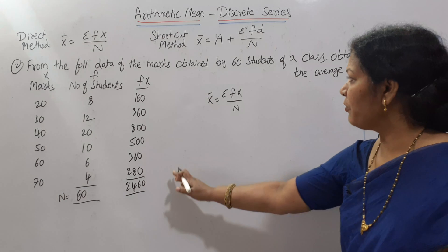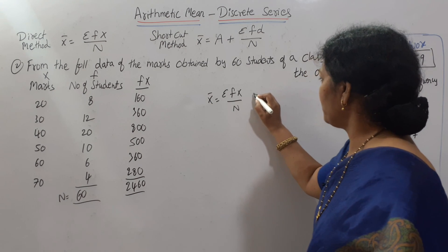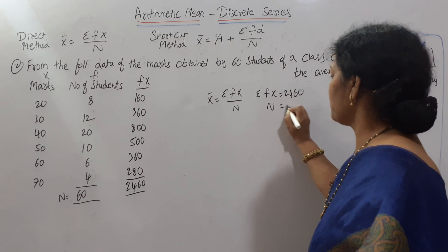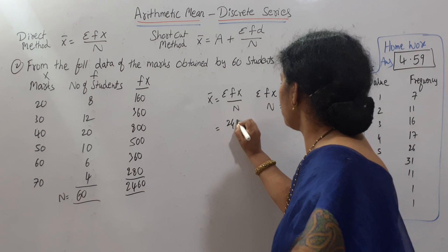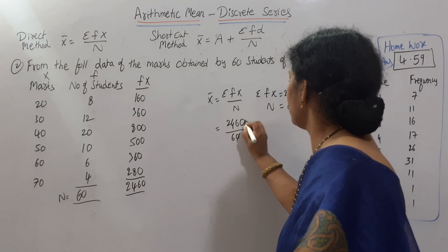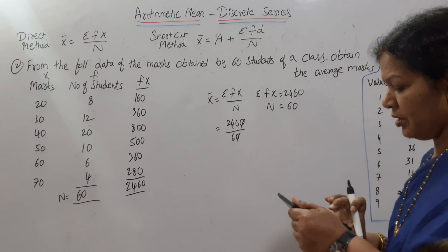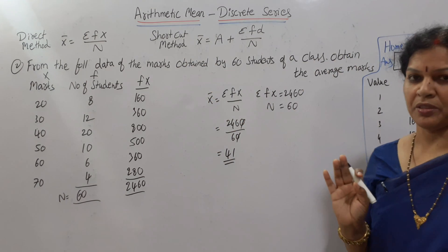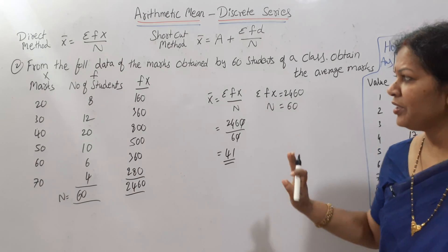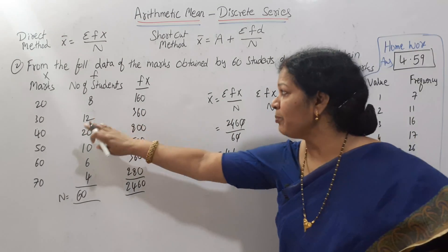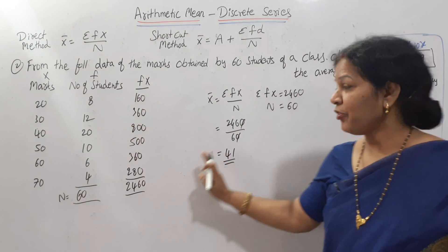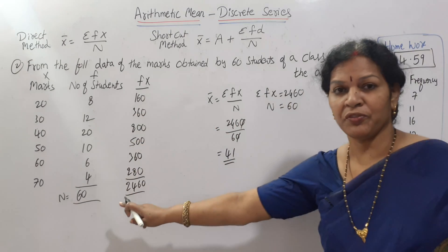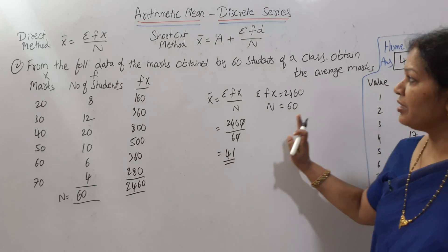Everything is 2460. ΣFX = 2460 and N = 60. Applying in the formula: 2460 ÷ 60 = 41. So X̄ = 41. This is as per the direct method. We were given X and frequency, we multiplied to get FX, and the formula is ΣFX / N. FX total is 2460, N is 60, answer is 41.